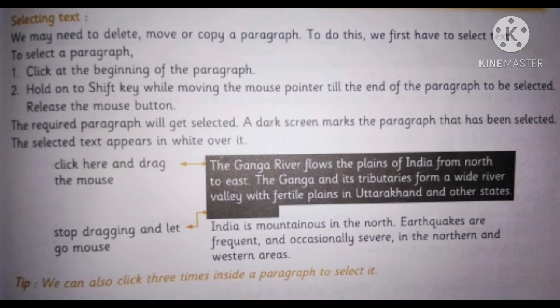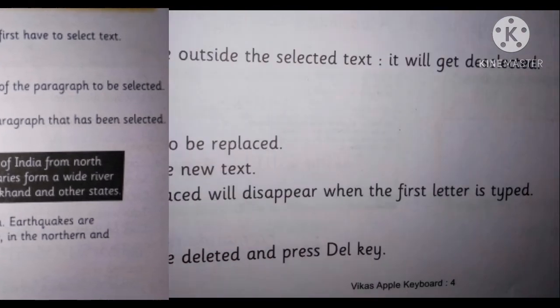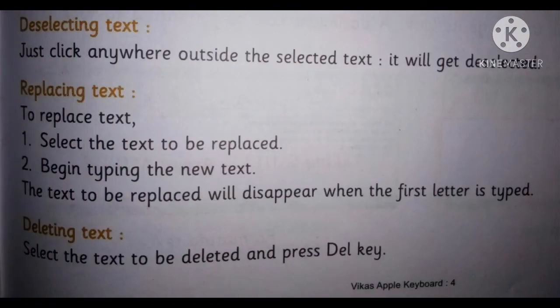We can also click three times inside a paragraph to select it. To deselect text, just click anywhere outside the selected text and it will get deselected.